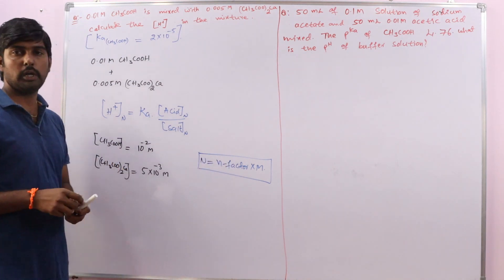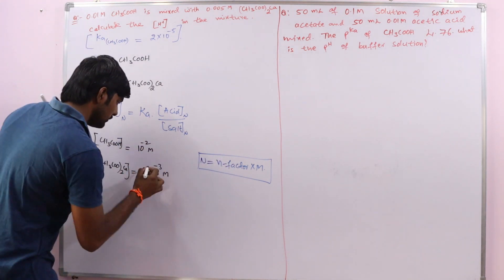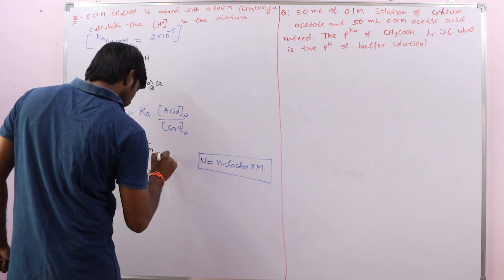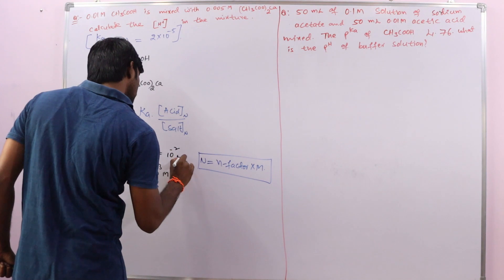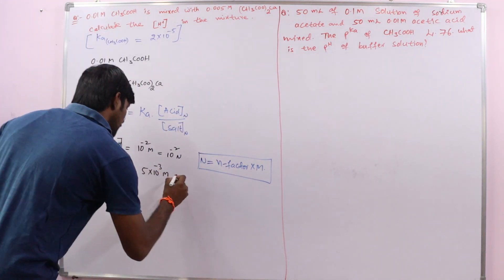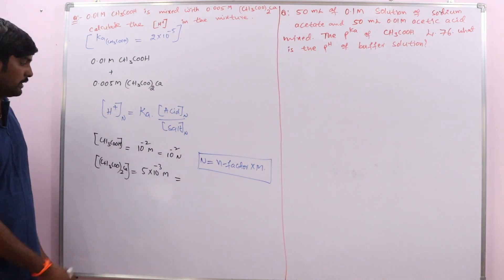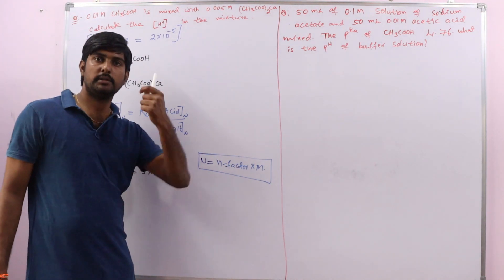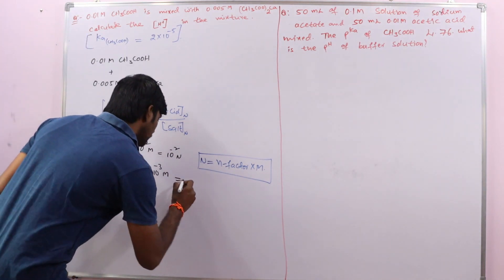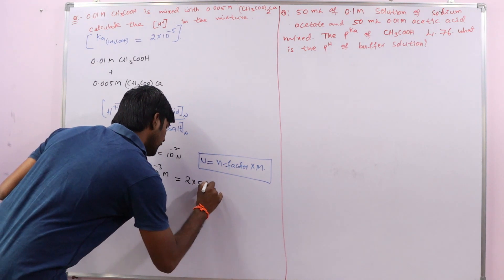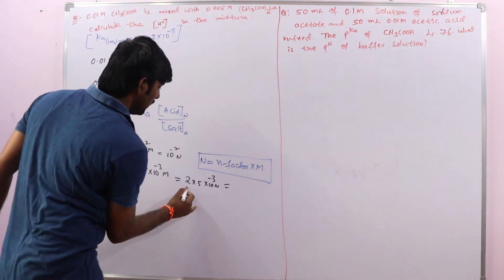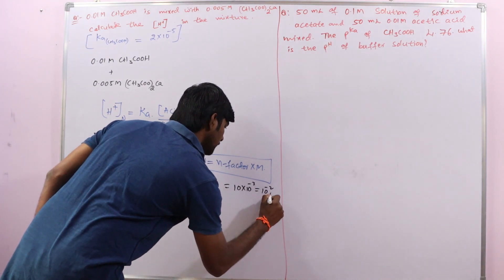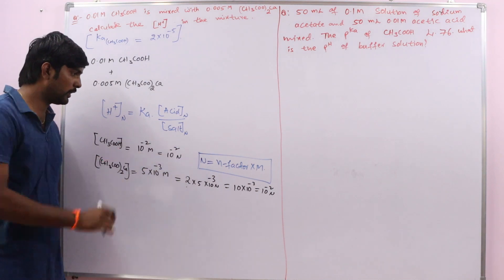For acetic acid, the n-factor is 1, so its normality equals 10⁻² normal. For calcium acetate, the n-factor is 2, so: 2 × 5×10⁻³ = 10×10⁻³ = 10⁻² normal. So the concentration of acid is 10⁻² normal and the concentration of salt is also 10⁻² normal.